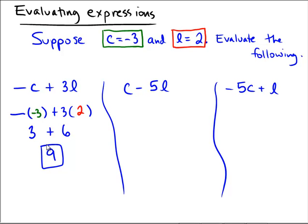Next one over is c minus 5l. On this one we have c minus 5 times l. We will replace c with the number negative 3 and l with the number 2.